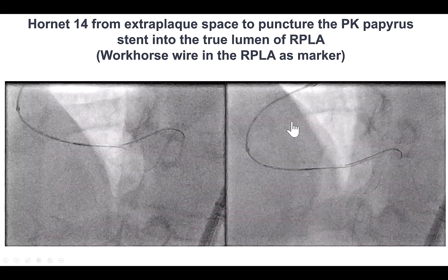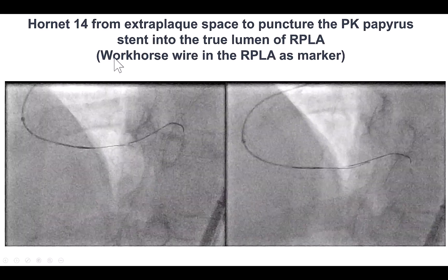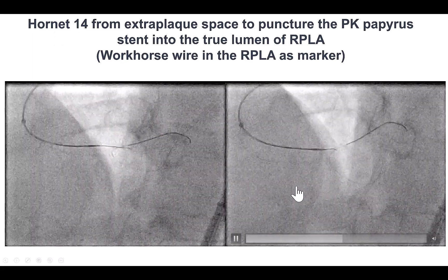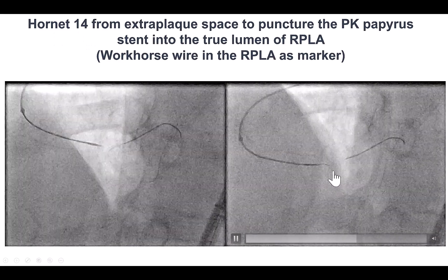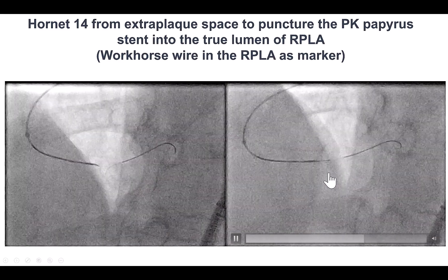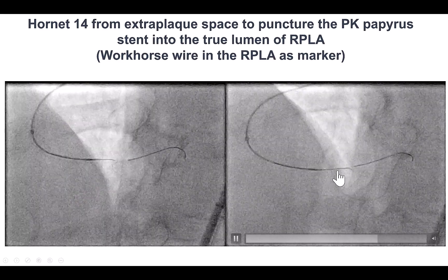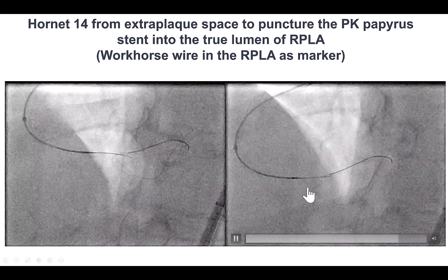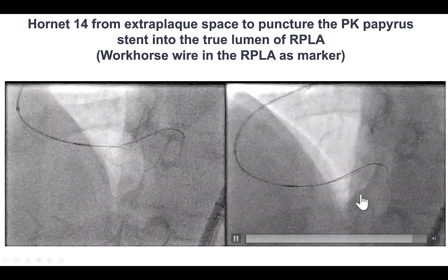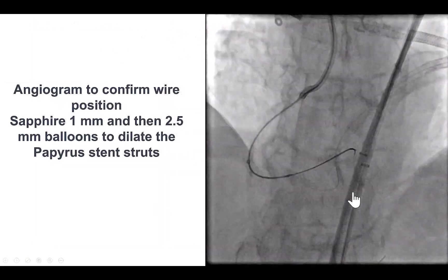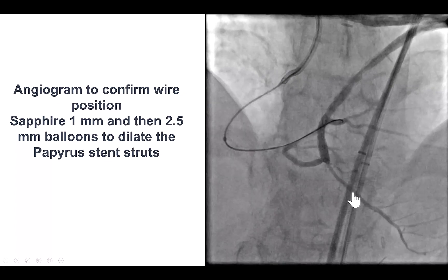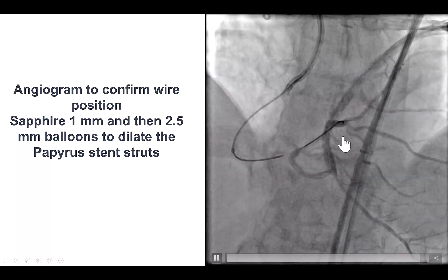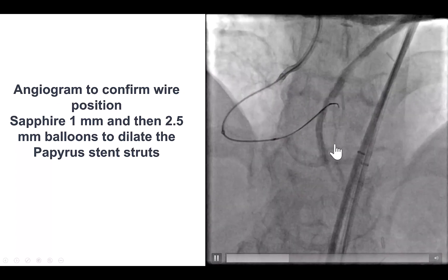We advanced the microcatheter and then used a Hornet 14 guide wire, using the antegrade wire as the target. By doing that, we were able to puncture through the papyrus and advance the Hornet along the right posterolateral. Injection from the saphenous vein graft confirmed that we were inside the distal true lumen.